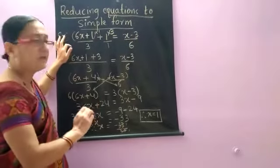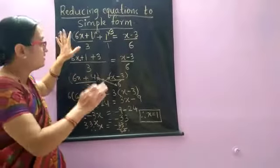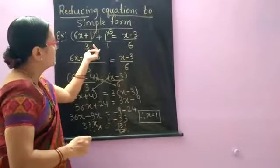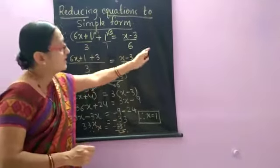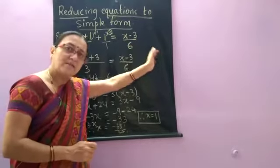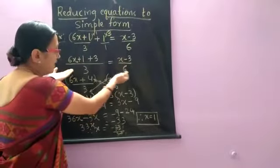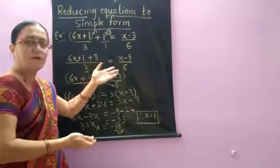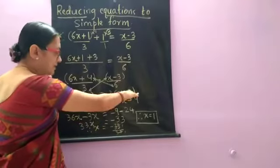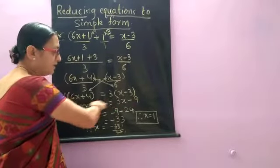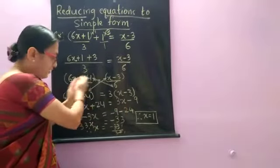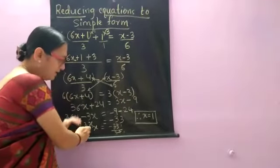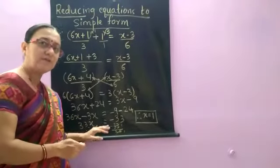So first the equation was not in a simple form. Similar way we have to solve all the examples. Do not change any of the methods here. Take LCM for left hand side. Even right hand side is having more terms, take LCM there also. Then once you get the LCM, cross multiply the numerator and denominators here. Then you will get an equation of a variable having on the both the sides. Shift the constants one side and shift the variables one side. Then solve it by normal linear equation method.